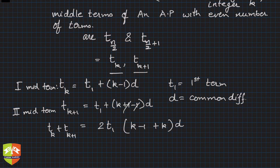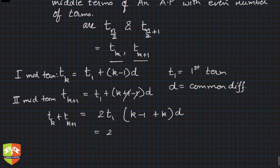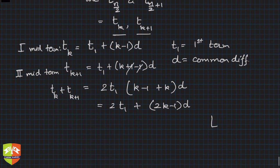Hence, this is nothing but 2t_1 + (2k-1)d. Now remember what did we assume? n is equal to 2k, so we can write n is equal to 2k.